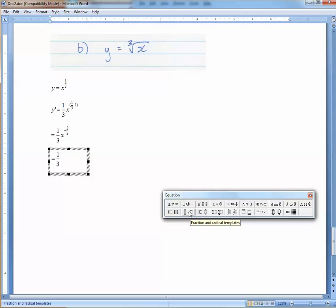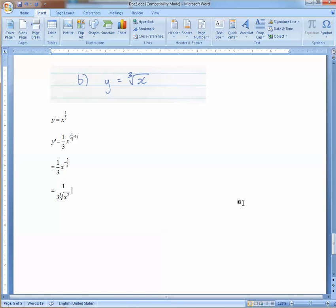Because it's 2 over 3, it's going to be the cube root. So we need the space to put the little 3, and it's x squared. Done.